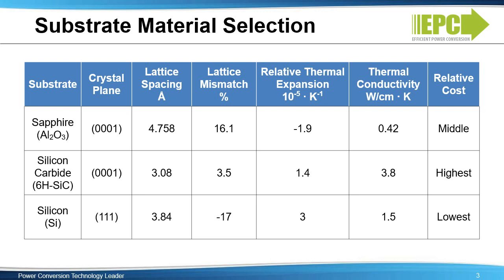Referring to the table here, there are trade-offs between any of the three listed choices for a substrate material. For example, sapphire has a 16% mismatch to GAN crystal lattice and has poor thermal conductivity.